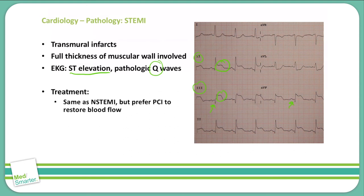Treatment for STEMI is the same as for NSTEMI — we're going to use heparin, aspirin, clopidogrel, beta blockers, ACE inhibitors, and statins. We can treat symptomatically with nitroglycerin and morphine. But specifically for STEMI, we're going to perform a PCI, or percutaneous coronary intervention, where we go find the clot, destroy the clot, remove the clot, or open up the arteries to allow blood flow to continue through the heart.